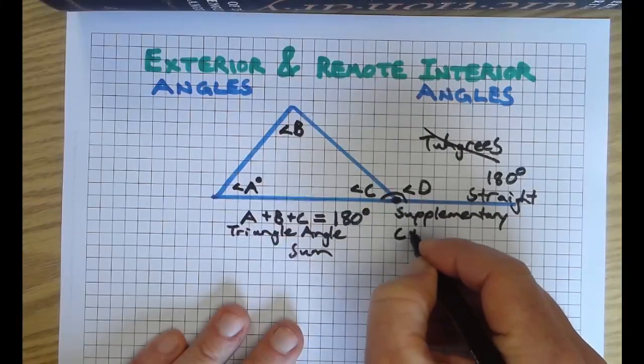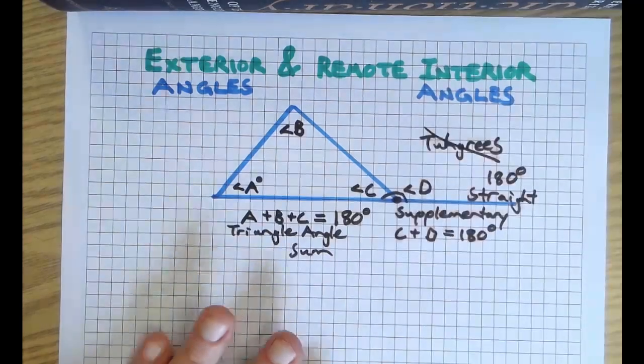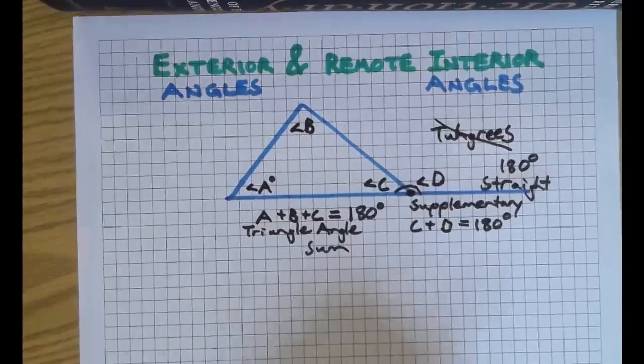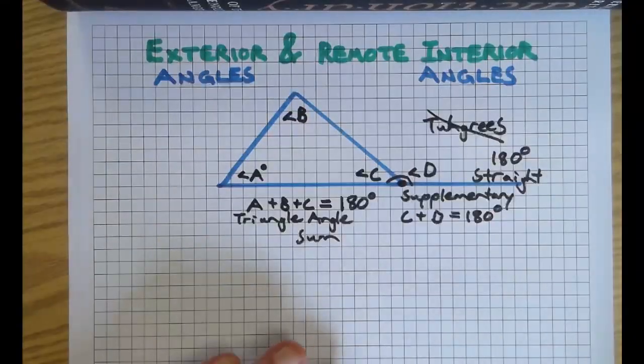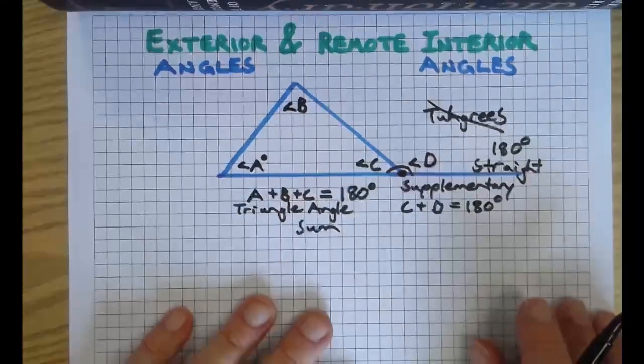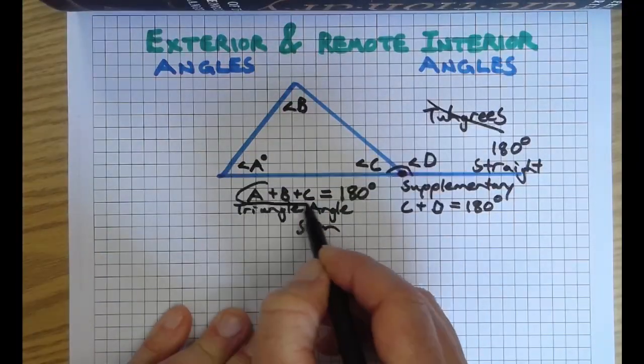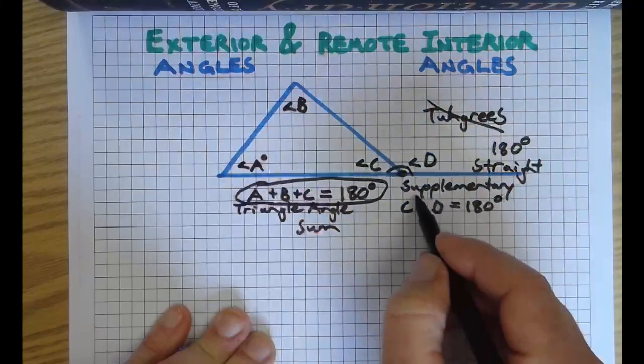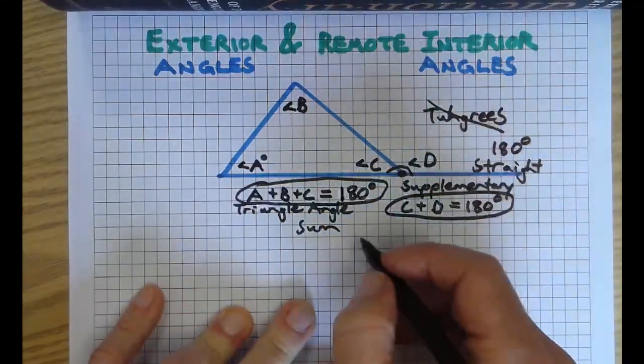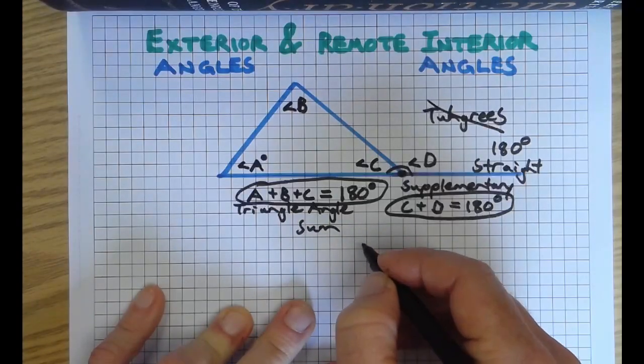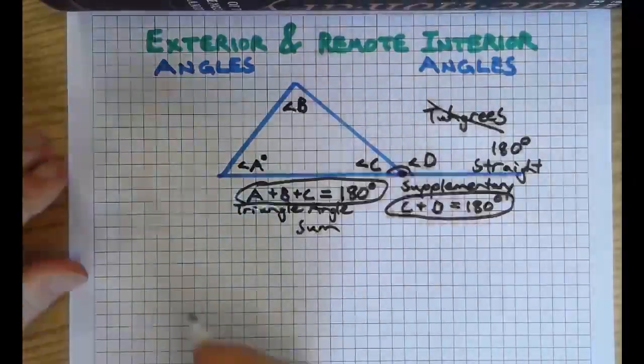So we know that C plus D therefore also equals 180. And we know how to solve equations for variables and eliminate things. So let's go ahead and do that. Since A plus B plus C equals 180, and C plus D also equals 180, don't they therefore also equal each other? The answer is yes.